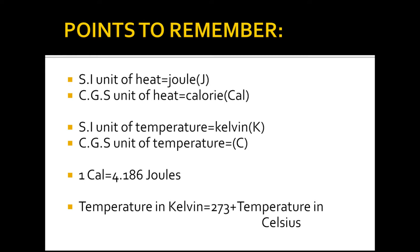The SI unit of temperature is Kelvin (K). It can also be expressed as degree Celsius. The degree centigrade corresponds to Kelvin; 1 degree centigrade is equal to 273 Kelvin. How would you convert degree Celsius to Kelvin?